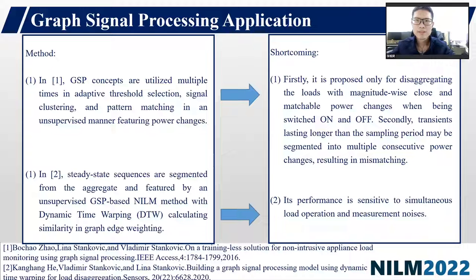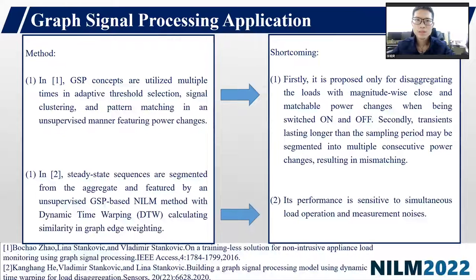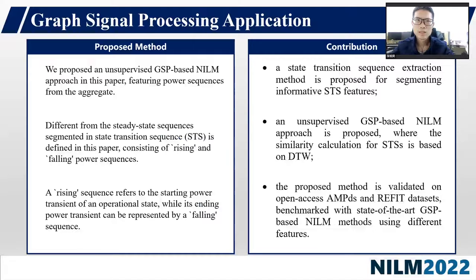However, this method features power changes, limiting its robustness. Firstly, it is proposed only for disaggregating loads with magnitude-wise close and matchable power changes when being switched on and off. Secondly, transients lasting longer than the sampling period may be segmented into multiple consecutive power changes, resulting in mismatching. Instead of widely-featured power change events, steady-state sequences are segmented from the aggregate and featured by an unsupervised GSP-based NILM method in reference-2. Since the segmented sequences may differ in length, dynamic time warping is utilized to calculate similarity in graph edge weighting. However, its performance is sensitive to simultaneous load operation and measurement noises.